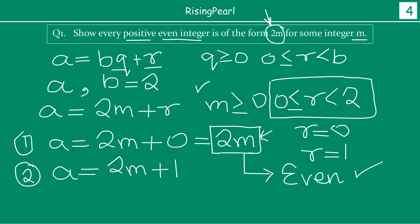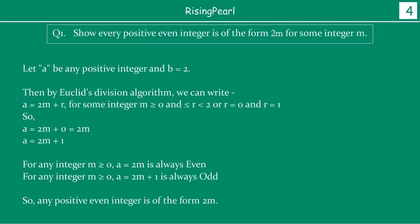So friends, this is how you solve these questions. In your exam, you write it like this: Let a be any positive integer and b equal to 2. By Euclid's division algorithm, we can write a equals 2m plus r, for some integer m greater than or equal to 0, and r is greater than or equal to 0 but less than 2, so r is 0 or 1. Therefore a equals 2m or a equals 2m plus 1. For any integer m greater than or equal to 0, a equals 2m is always even, and a equals 2m plus 1 is always odd. So any positive even integer is always of the form 2m.